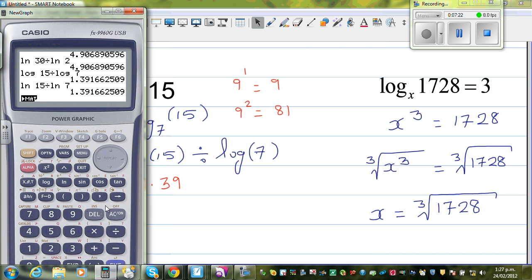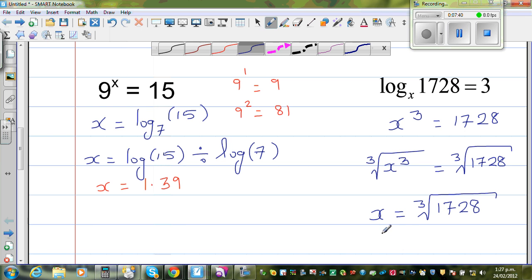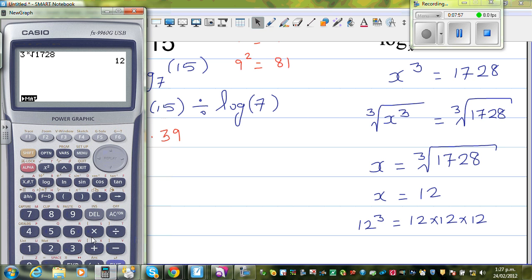Let us check on the calculator. This is how you do cube root - press 3, then shift, then the power key. Cube root of 1728 is equal to 12. This means that 12 cubed, which is 12 times 12 times 12, should be 1728. Let us check: 12 times 12 times 12 is 1728.